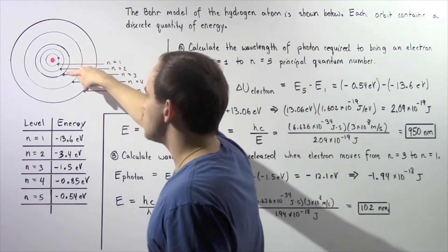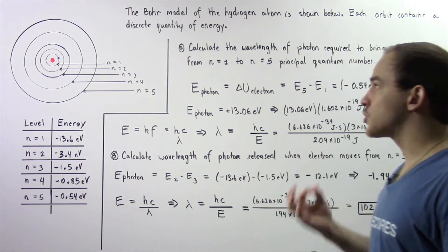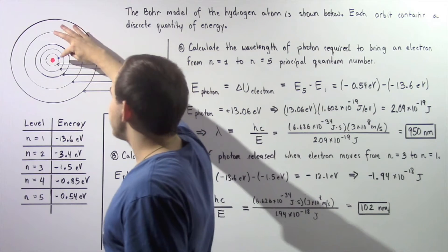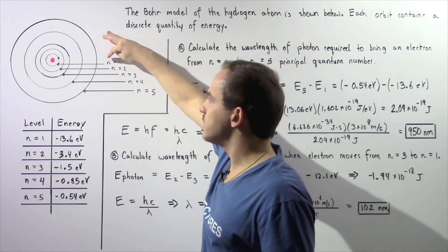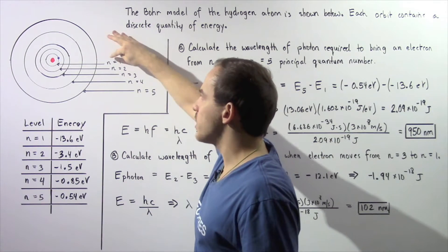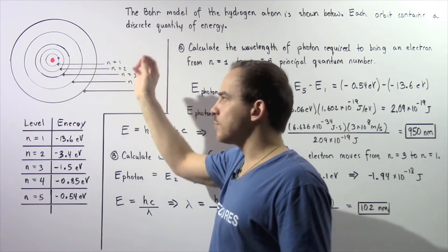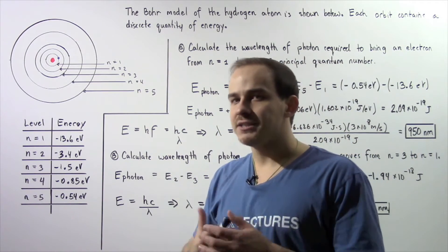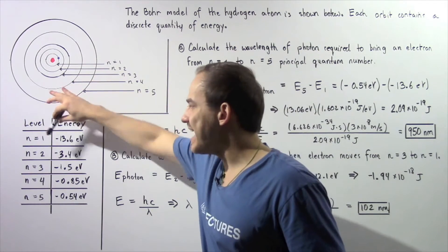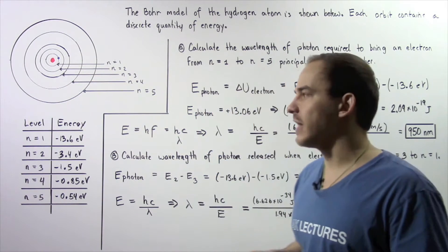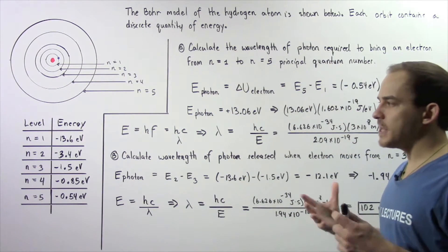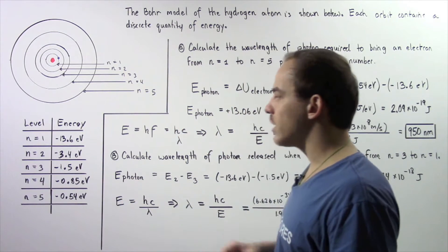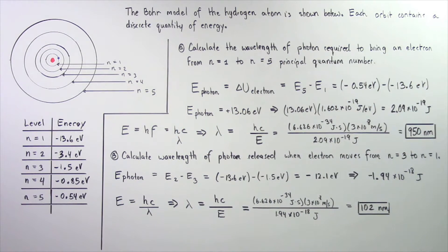Each one of these orbits represents a discrete quantity of energy. For example, if the electron is found in the orbit given by n equals 1, where n is the principal quantum number, that electron has a quantity of energy given by negative 13.6 electron volts. The same thing holds for n equals 2, n equals 3, n equals 4, and n equals 5.